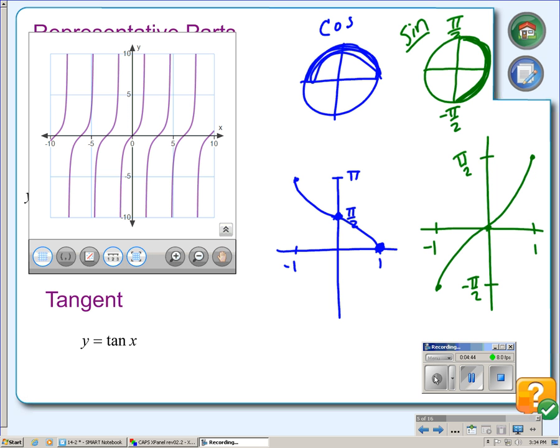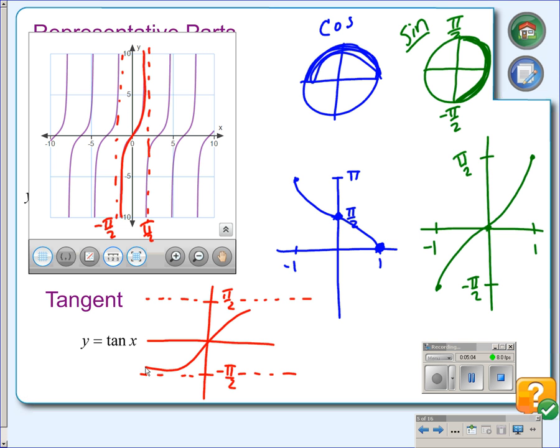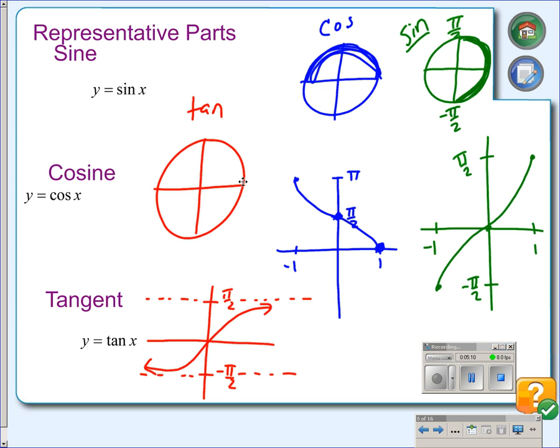Finally, we have the tangent function, and the simplest part of this to invert is going to be just this section right here in the middle. So, if we invert the tangent function, the vertical asymptotes become horizontal asymptotes, and the curve ends up looking like this. In terms of the unit circle, inverses to tangent functions give answers in the top half of the circle, just like the cosine function.